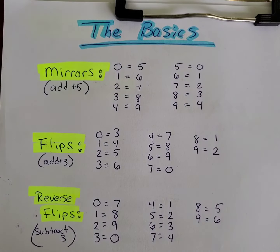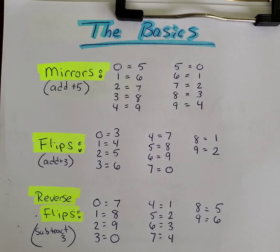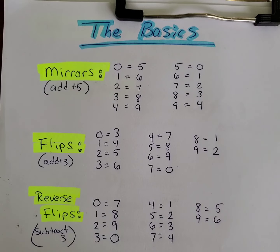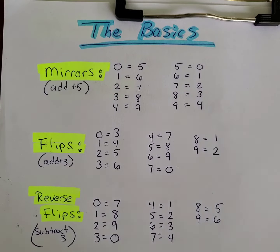Reverse flips are something you can get into. Say you have a number like five, five, five, and you think you want to play triple fives but you think they're probably going to mirror something or flip something. So say you mirror a five and take one of your numbers as a zero — now you have zero, five, five. You can actually take that and do a reverse flip and make it zero, five, two, just by taking one number and reverse flipping it, which would be subtracting three from it. Those are a variety of things you can look at and that's how those are played.